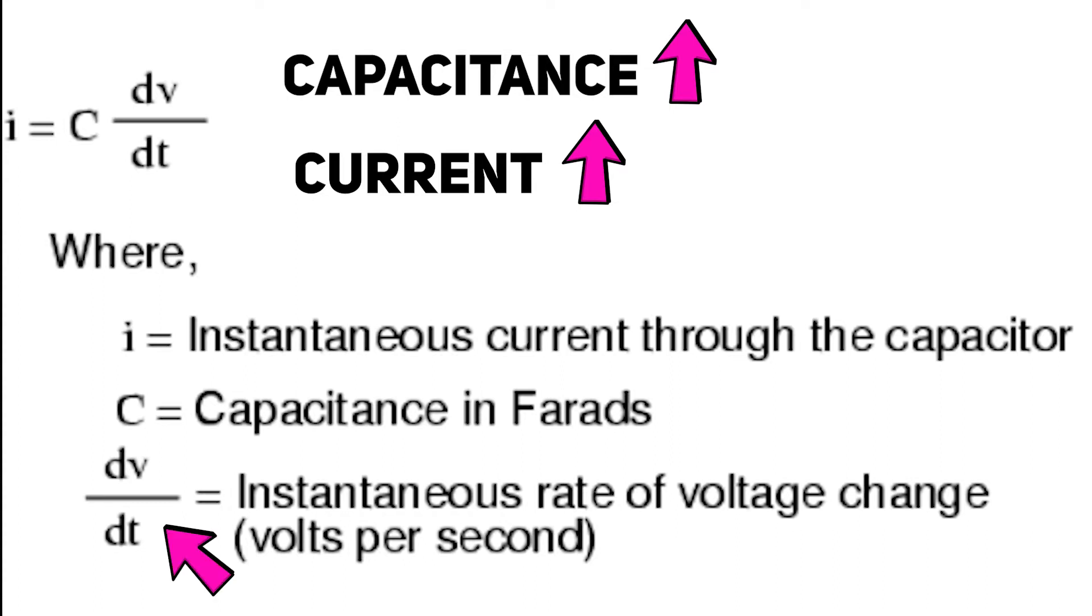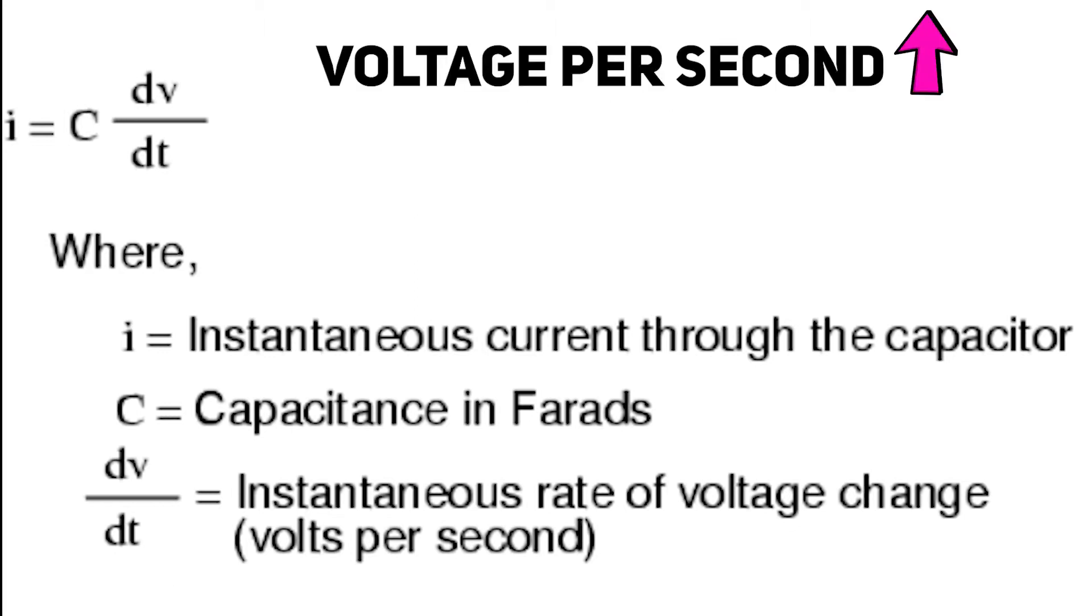Time derivative of voltage means the instantaneous voltage change over time, or volts per second. Higher voltage per second rate means higher current through a capacitor, and it seems very logical.